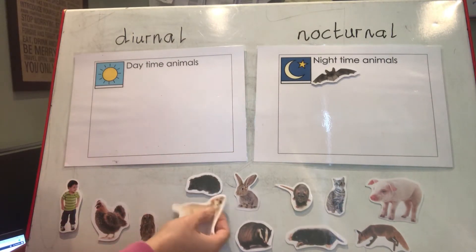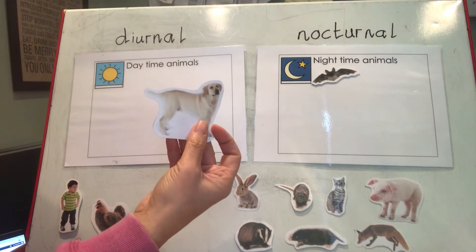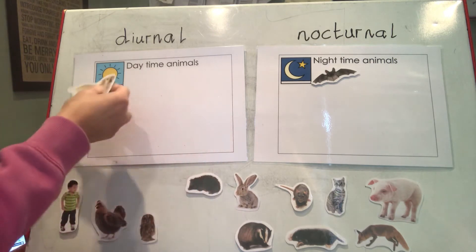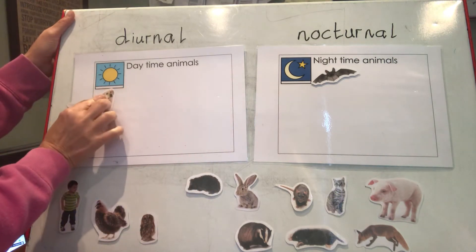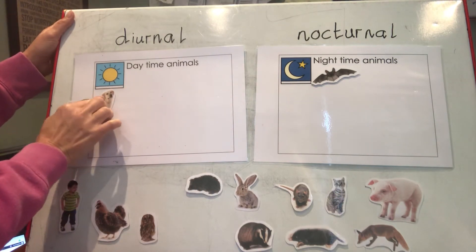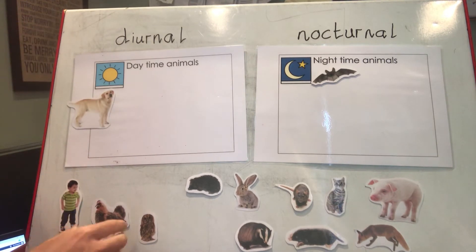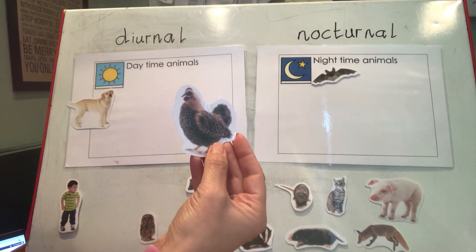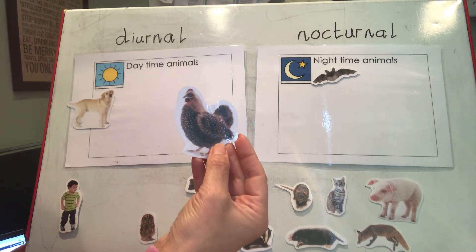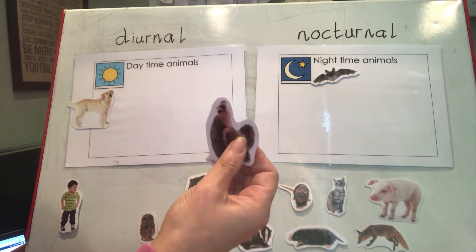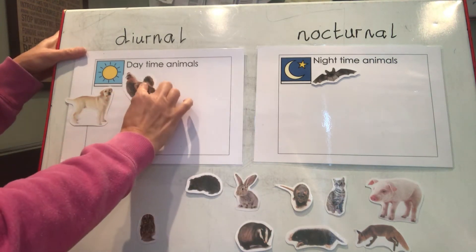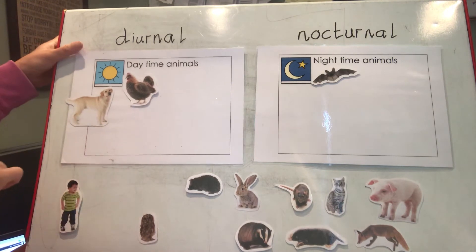The next one is a dog. What do you think? Well done if you said diurnal, because dogs are awake during the day. Now let's do a hen — are they awake during the day or at night? They are also diurnal — awake during the day.